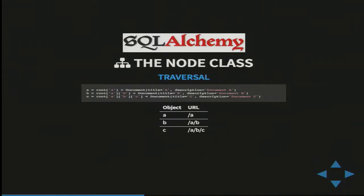The dictionary protocol gives us instantaneous traversal support with Pyramid, because Pyramid only requires an __getitem__ method to be implemented, which is exactly what the dict protocol does. Beyond that, we also have an ACL property on the node class to have persistent and inheritable access control lists.